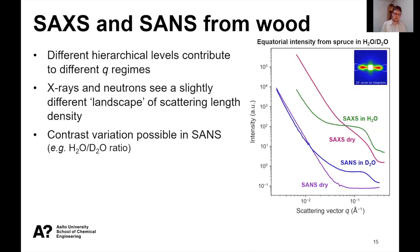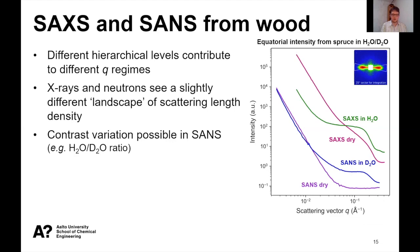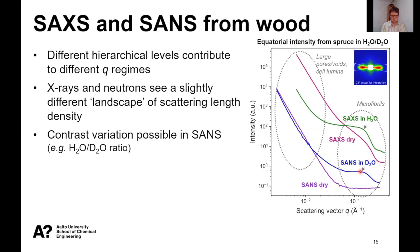In the small-angle scattering, different hierarchical levels contribute to different regions of the scattering vector q. At low angles we see a power law from larger pores or voids, or from the cell lumina — the central cavities of the cells — or from their surfaces. Then at higher q values we see scattering from the microfibrils, and especially this kind of shoulder or peak feature which corresponds to the mutual regular packing distance of the microfibrils.